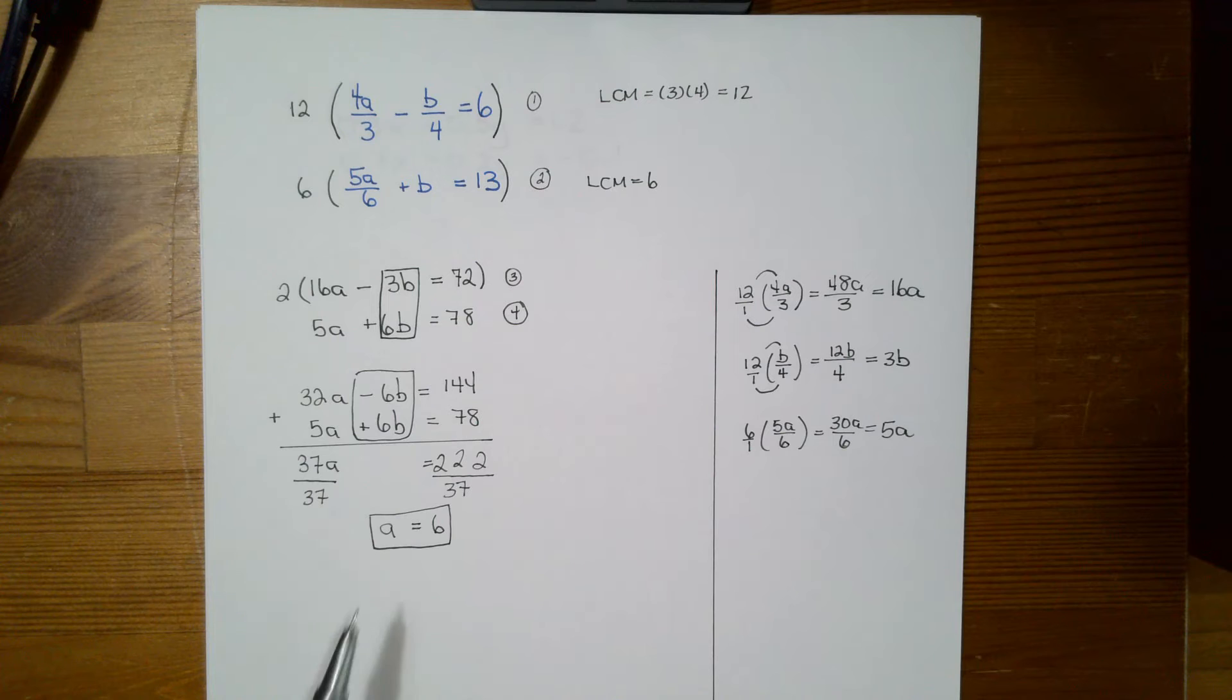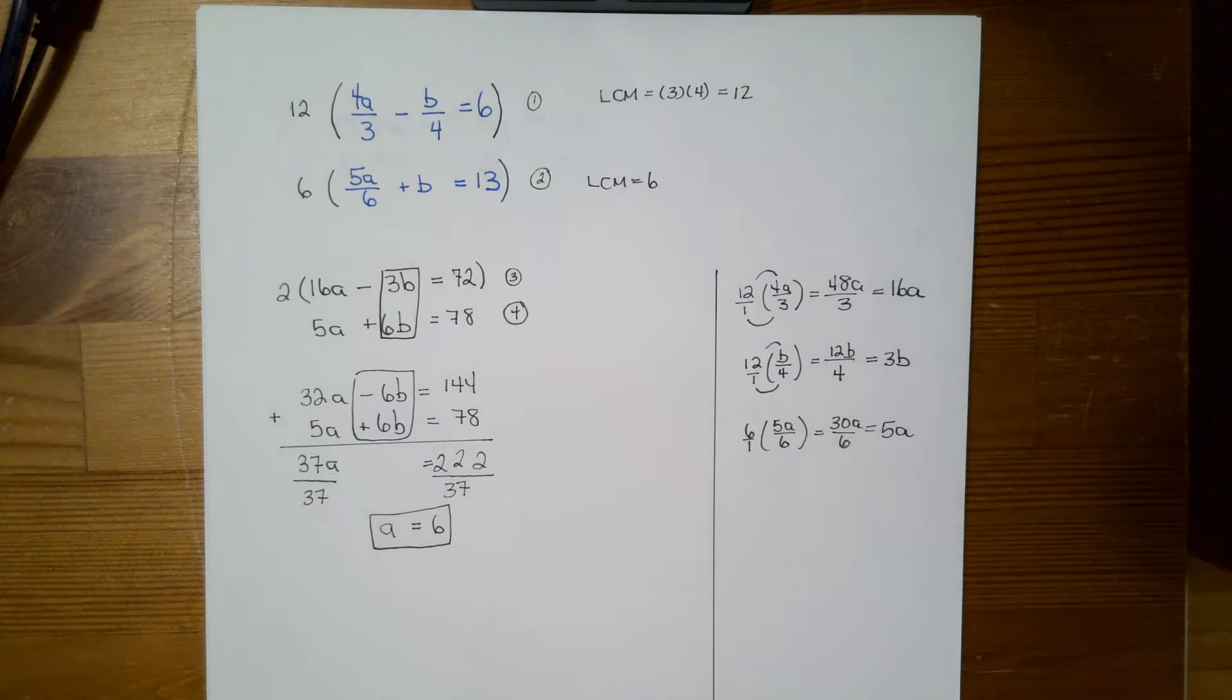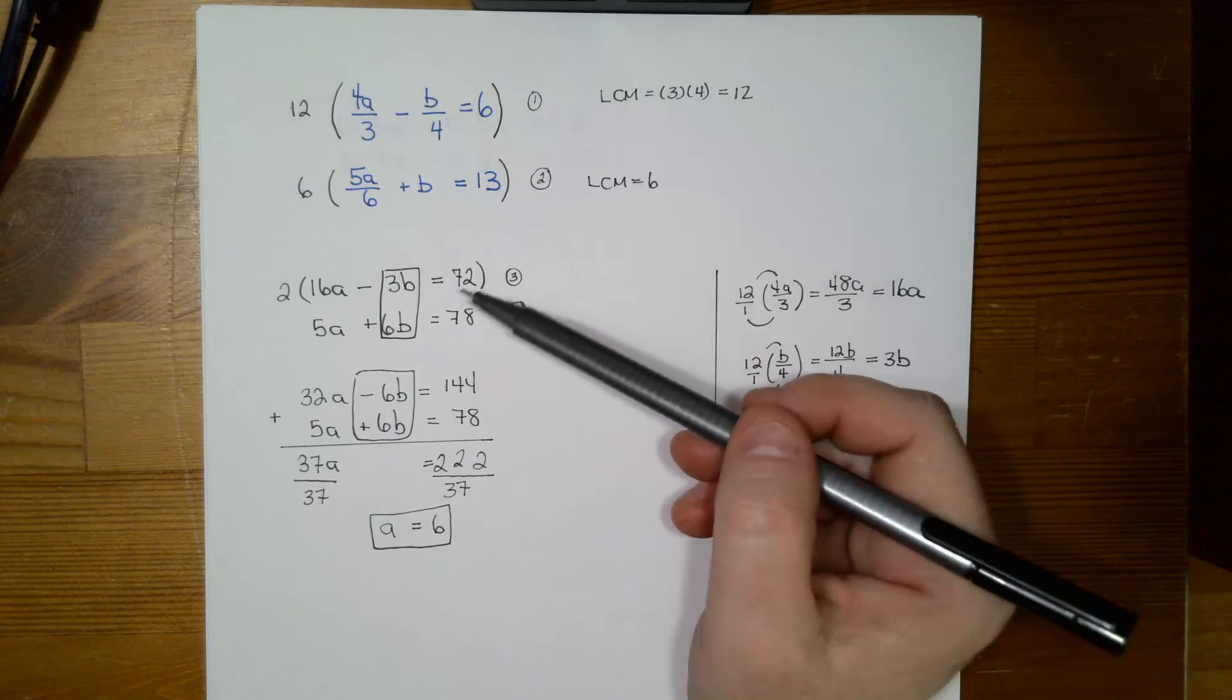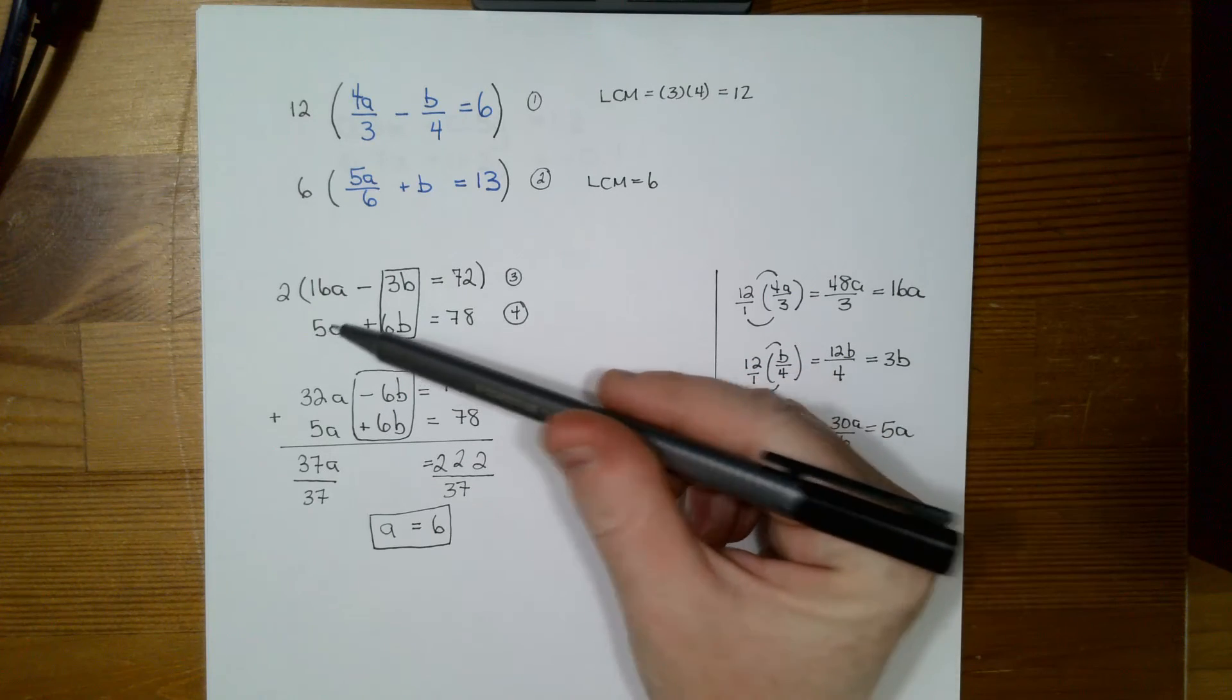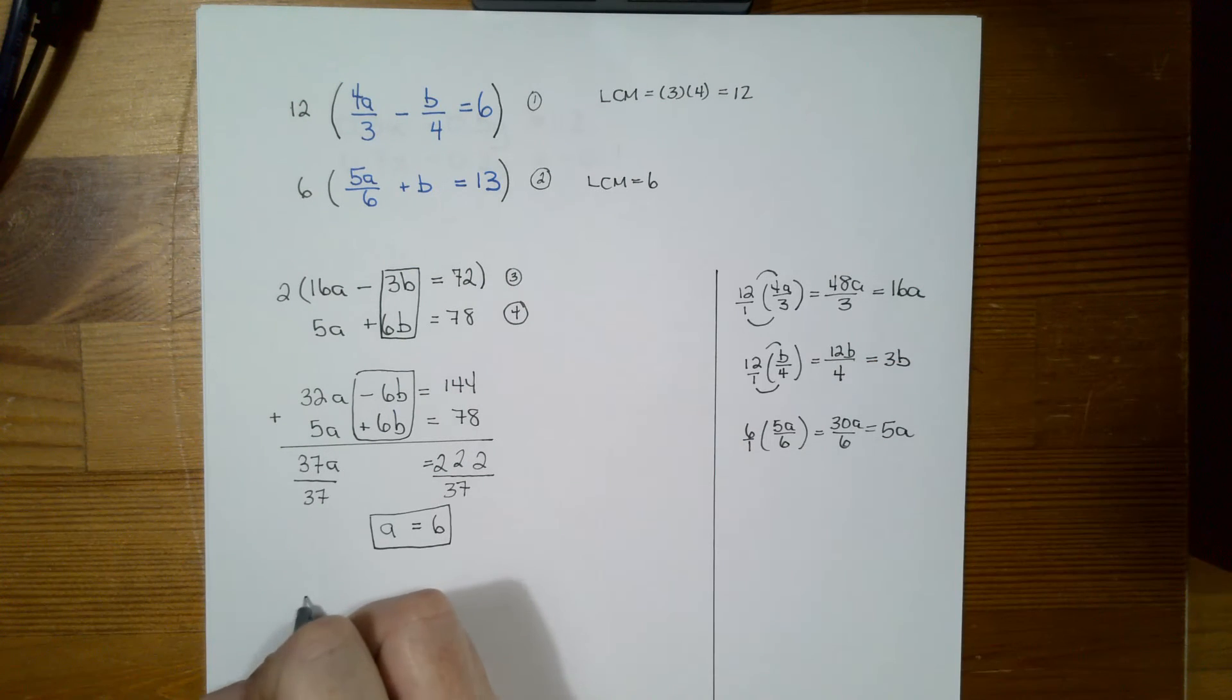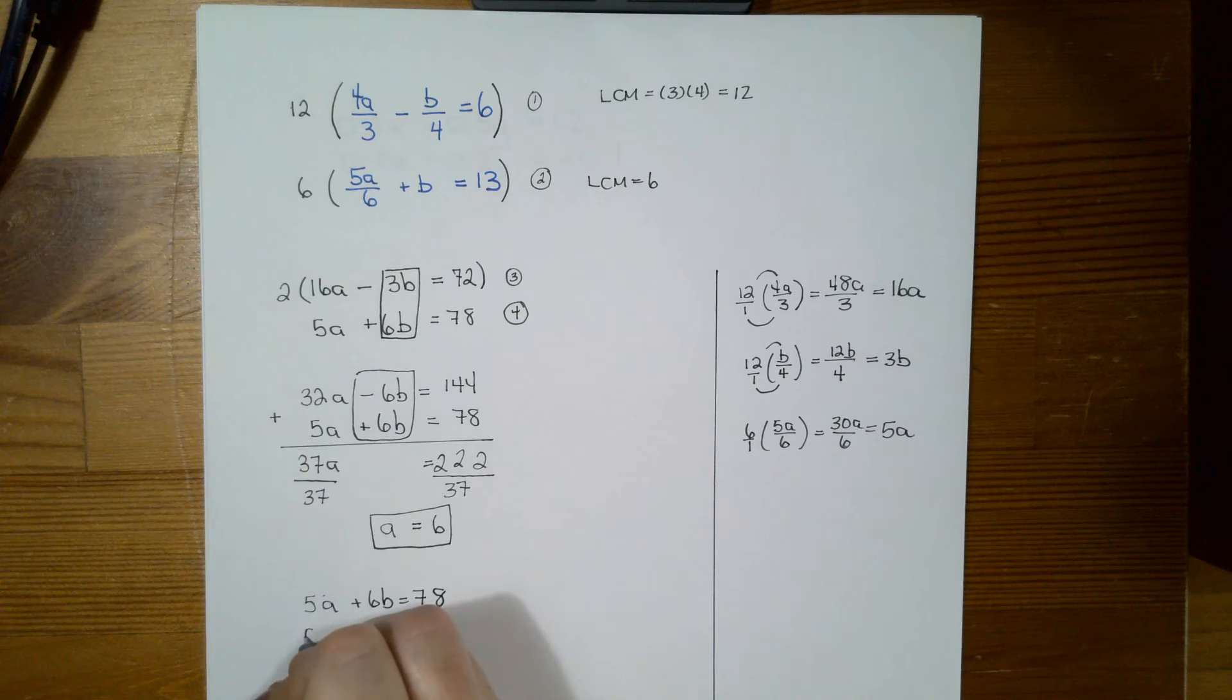So I need to substitute a into one of these equations. And I don't obviously want to substitute it back into here because I'm working with fractions again, or into here because I'm working with fractions again. So I'm going to take a look at this one. And this one has the smallest number. So I'm going to substitute a equals 6 back into number 4. So I'm just going to let me write that 5a plus 6b equals 78. Okay, so I know that a is 6. So I have 5. I replace a with 6 plus 6b equals 78.